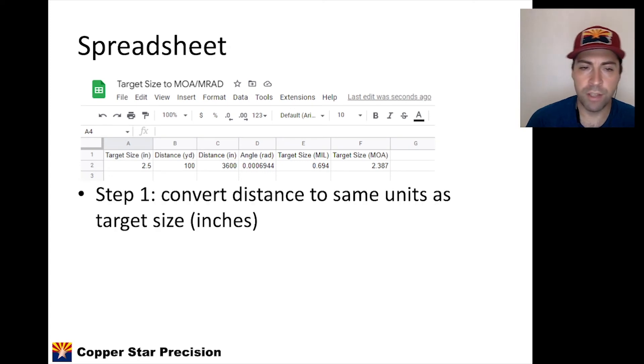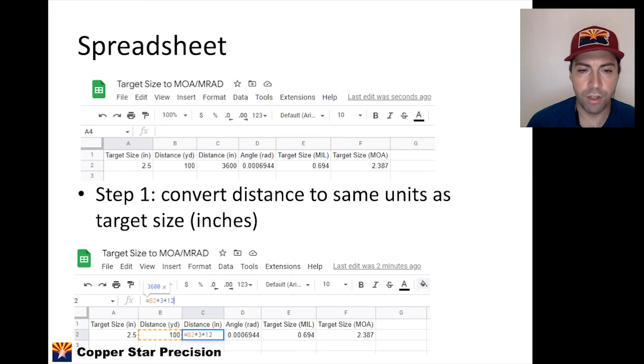Step one is to convert the distance to the same unit as the target size. So that's going to be column C. As you can see, the equation there, we're just taking the previous cell, in this case B2, and for converting from yards to inches, we have to multiply by three and then multiply by 12. There's three feet in a yard, there's 12 inches in a foot. So times three times 12, or times 36, because there's 36 inches in a yard, same thing. So we get from 100 yards to 3,600 inches. Pretty straightforward.